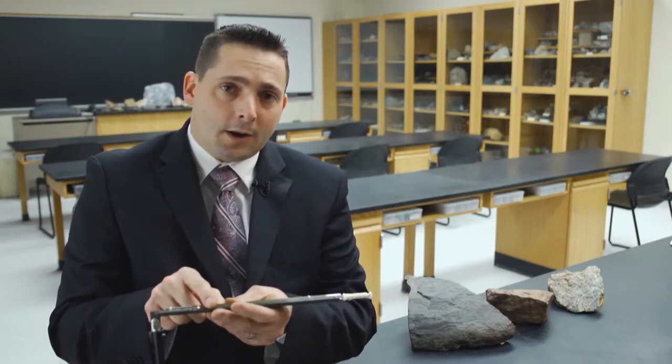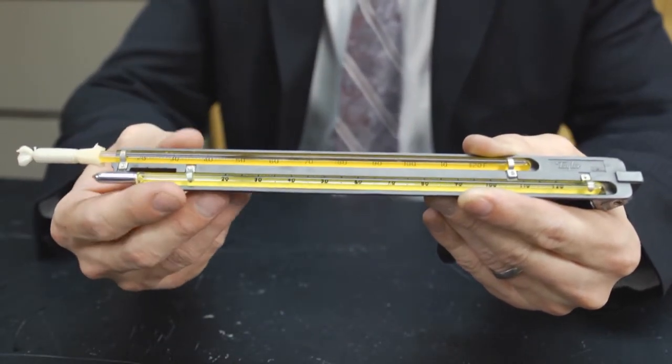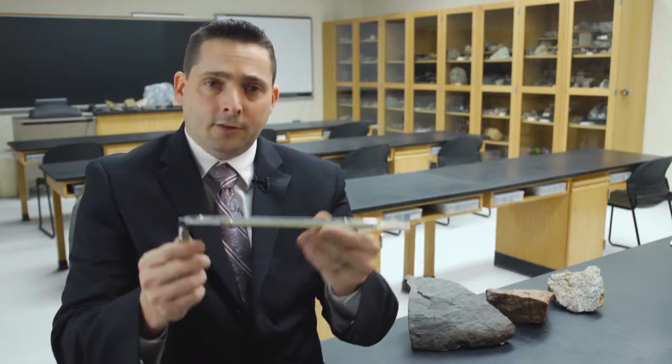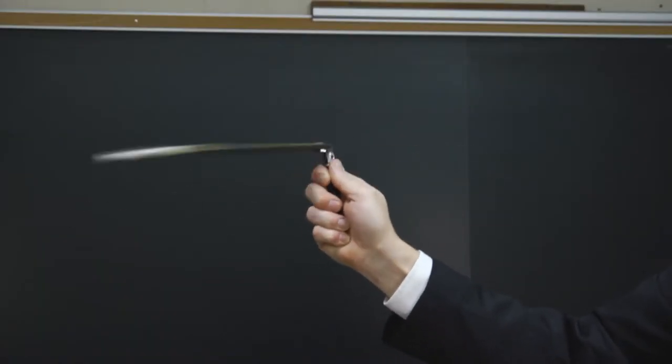And then we have a wet bulb. The wet bulb always has a cloth at the end and will be slightly moistened. And then we have the sling that they are attached to that allows us to spin the sling psychrometer.